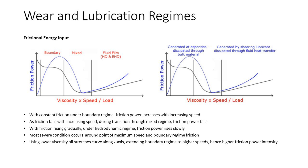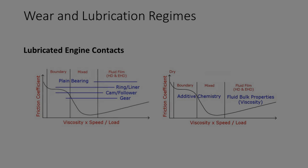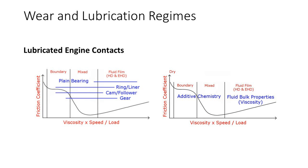Using lower viscosity oil stretches the curve further along the x-axis, extending the boundary regime to higher speeds and thus higher friction power intensity. If we now re-plot the Stribeck curve showing where typical engine components operate, we have the following.